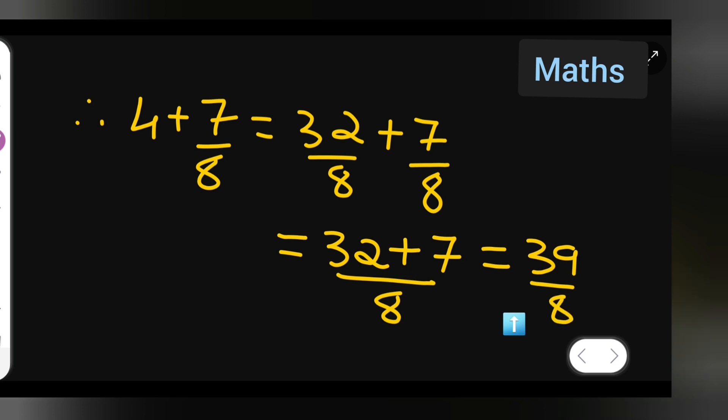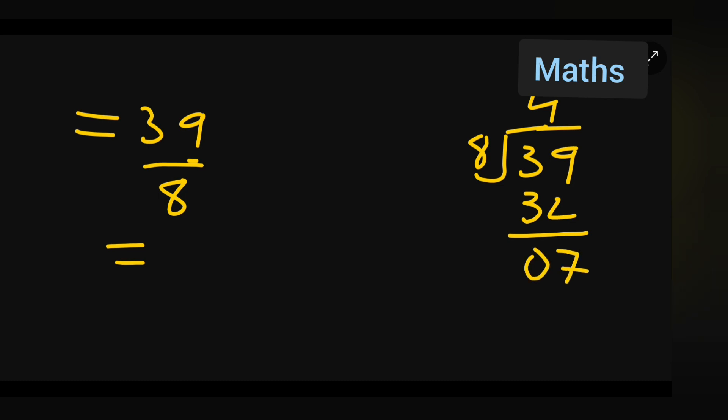So suppose if y'all want to do this in mixed fraction. What answer you got is 39 upon 8. If y'all want to write this in mixed fraction how y'all are going to do? So 8 divide by 39. So what answer you will get is 8 times 32. So 39 minus 32, 9 minus 2 will give you 7. And this will be 0.